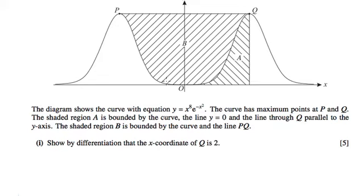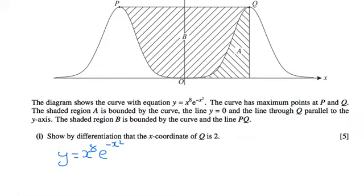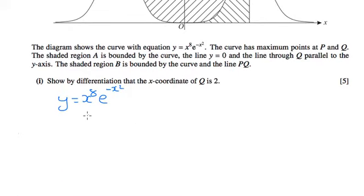So they've given us the curve, this crazy curve here, which is y equals x^8 times e^(-x^2). In order to differentiate this, we're going to need to use the product rule and the chain rule as well when we come to differentiate the e^(-x^2).